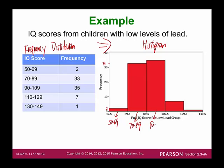The third class is from 90 to 109 with a frequency of 35. The fourth class is 110 to 129 with a frequency of 7. The last class is from 130 to 149 with a frequency of 1. You can also list the frequency on top of each rectangular box: 33, 35, 7, and 1.